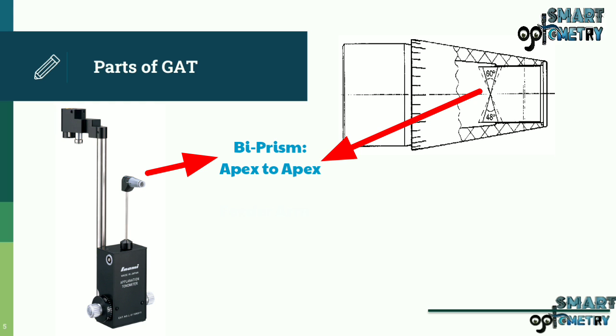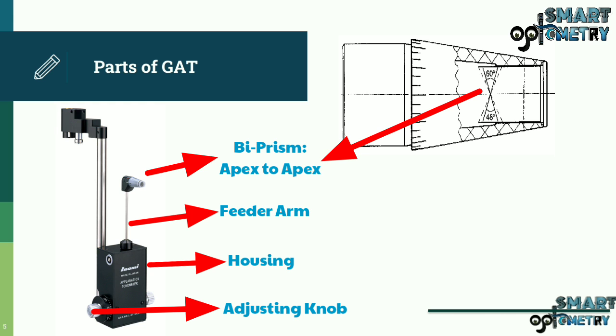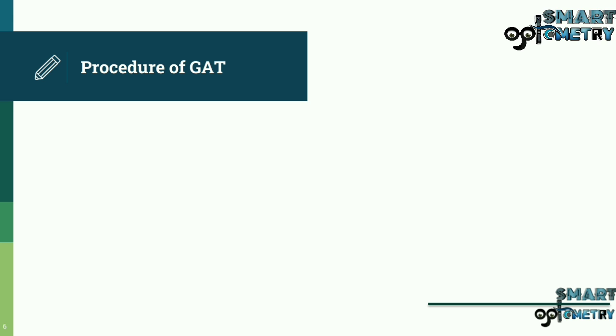Parts of the Goldman Applanation Tonometer consist of a biprism, feeder arm, housing, adjusting knob, and a connector for the slit lamp.